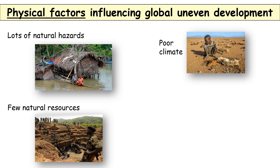Next, climate. In a very poor climate, you're not going to be able to grow much food, and with less food production it could lead to malnutrition, such as in countries of Central Africa, and this will hinder development. Also, countries with poor climate will have fewer crops to sell, meaning they earn less and have a worse quality of life because they haven't got the money to improve their lives.